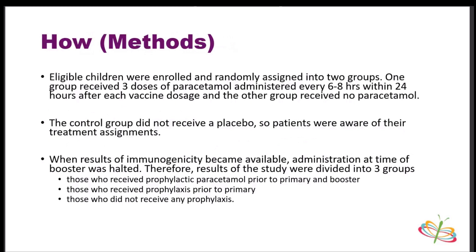Eligible children were enrolled and randomly assigned into two groups. One group received three doses of paracetamol administered every six to eight hours within 24 hours after each vaccine. The other group did not receive any paracetamol; the control group did not receive a placebo, so it was obvious which treatment group they were assigned to. When preliminary results of immunogenicity became available, administration of paracetamol at the time of the booster was changed, resulting in the study being divided into three groups regarding the booster vaccine.